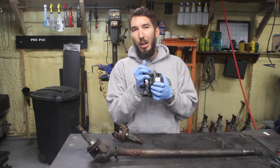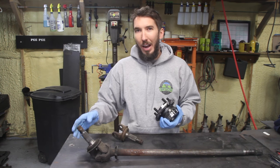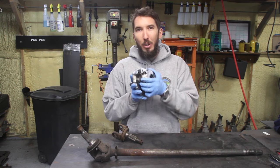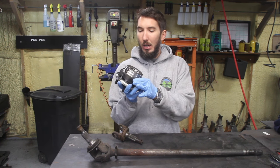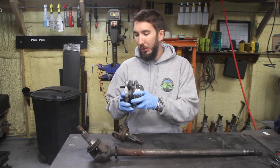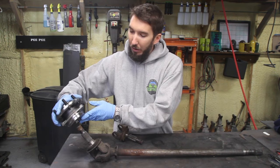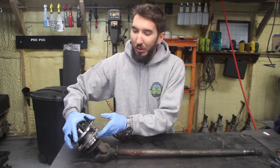But whenever you want to upgrade, you can buy a 30-spline outer, and you can buy a 30-spline unit bearing to match. So that way they both fit together.